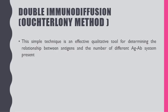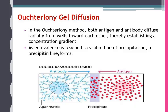The second method is double immunodiffusion, otherwise called the Ouchterlony method. This is a simple and effective qualitative tool for determining the relationship between antigens and the number of different antigen-antibody systems. In the Ouchterlony gel diffusion method, in an agar matrix one well is coated with antibody and the other with antigen. Both antigen and antibody diffuse radially from wells toward each other, establishing a concentration gradient. As they meet, a visible precipitating line is formed. From this we can determine the concentration of antigen and antibody, which is the main importance of the Ouchterlony gel diffusion method. Thank you.